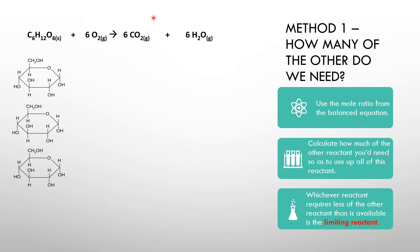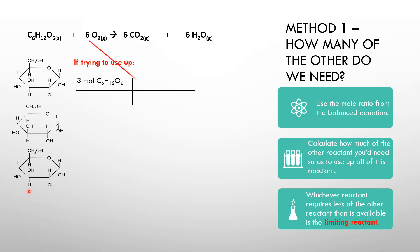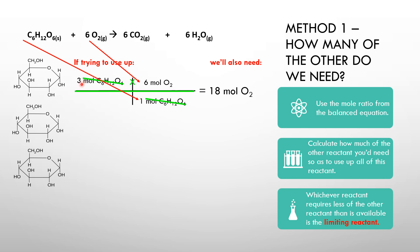Here's Method 1. The idea is to determine how many of the other reactant we need. Starting with glucose — I've got three moles of it — I want to see how much oxygen I would need in order to react all three moles of glucose. In other words, if glucose were the limiting reagent, how many moles of oxygen would we use up? We set up a T-chart: to use up three moles of glucose, the ratio in which they react with oxygen is six to one, coming straight from the balanced equation.